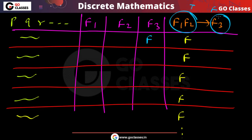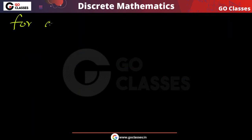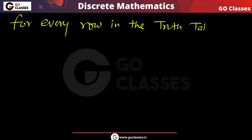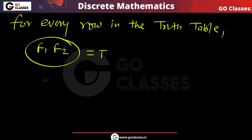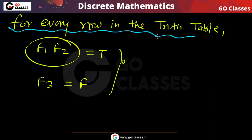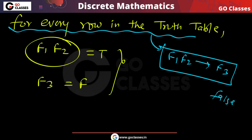For every row in the truth table, f1 ∧ f2 must be true and f3 must be false. Because in every row f1 ∧ f2 → f3 is a contradiction — it must be false in every row — that means f1 ∧ f2 is true and f3 is false in every row.